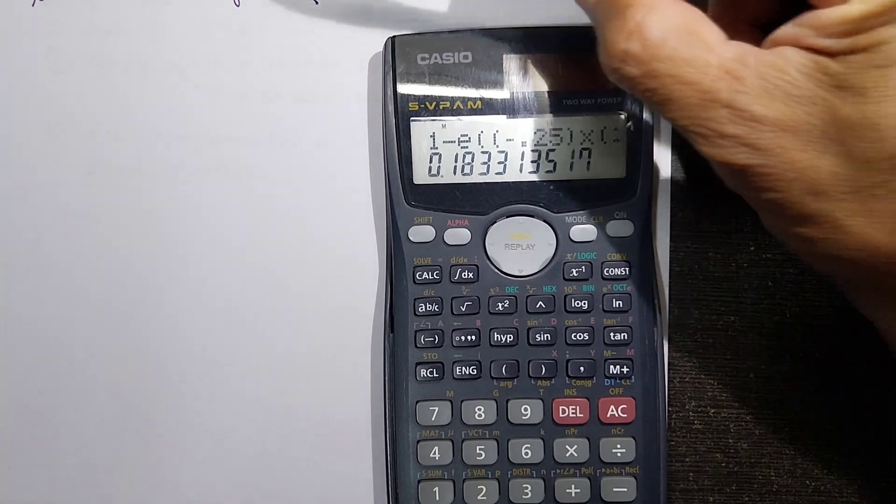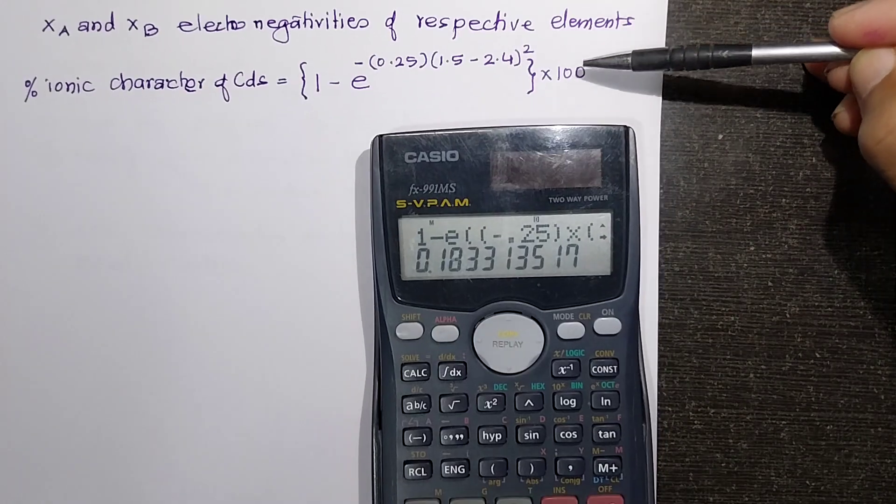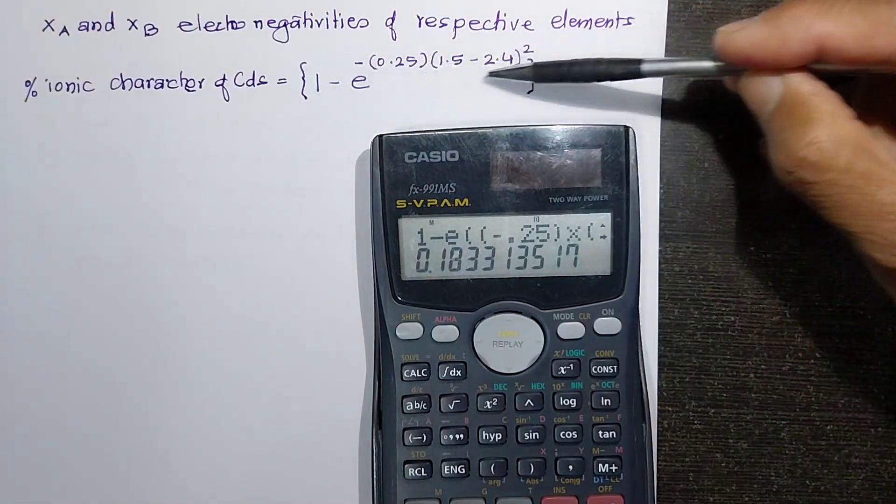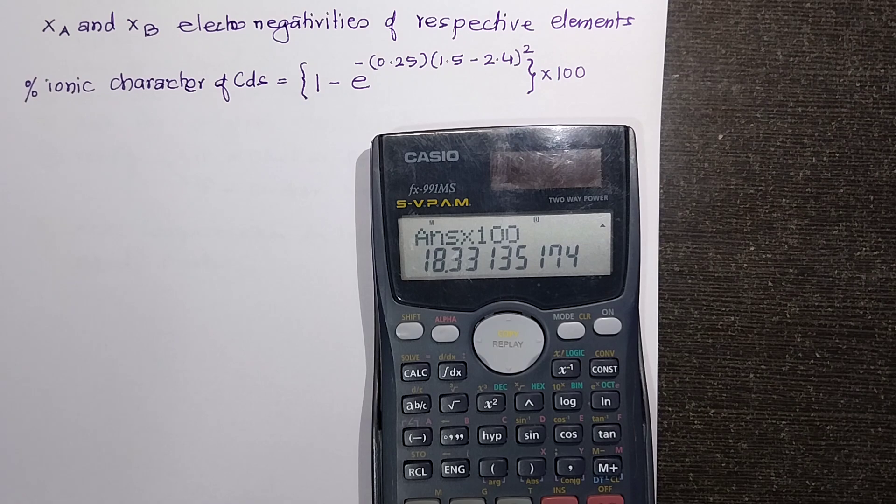Remember this is the value between the curly brackets and we need to now multiply that by 100. This is the value between curly brackets and a multiplication by 100 is necessary. I will multiply this by 100 and that gives me 18.33.